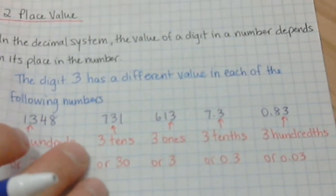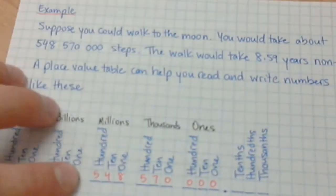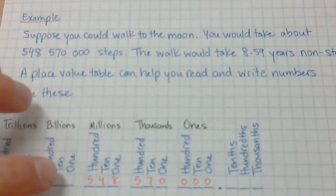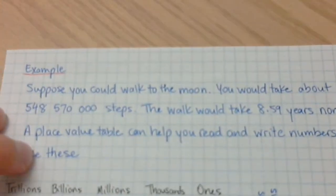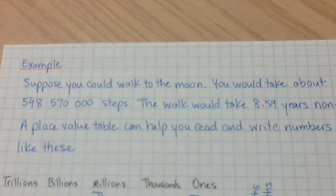Now let's work on a couple of examples. Let's imagine for a second that we could actually just walk to the moon. What that means is we take about 548,570,000 steps. Approximately, it's an estimate. And the walk would actually take us about 8.59 years, non-stop. Now, a place value table can help us read and write numbers like this.